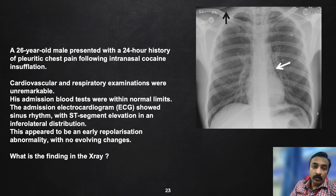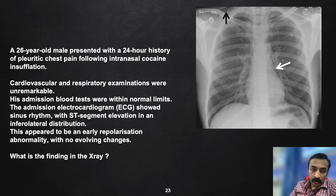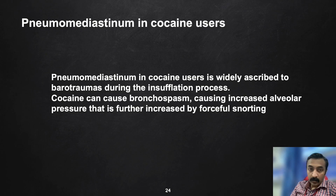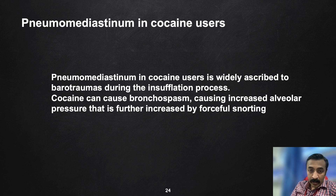We have a 26-year-old patient who presented with a 24-hour history of pleuritic chest pain following intranasal cocaine insufflation. Cardiovascular and respiratory examinations were unremarkable and admission blood tests were within normal limits. ECG showed sinus rhythm with ST elevation in an inferolateral distribution, appearing to be early repolarization with no evolving changes. What you see in the X-ray is pneumomediastinum in a cocaine user. Pneumomediastinum in cocaine users is widely ascribed to barotrauma during the insufflation process — cocaine can cause bronchospasm causing increased alveolar pressure, further increased by forceful snorting.